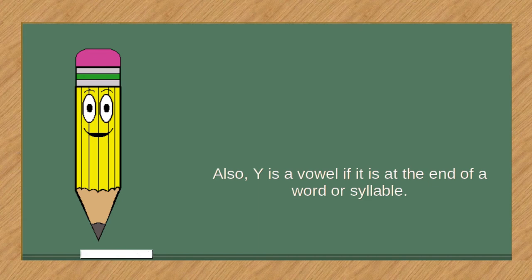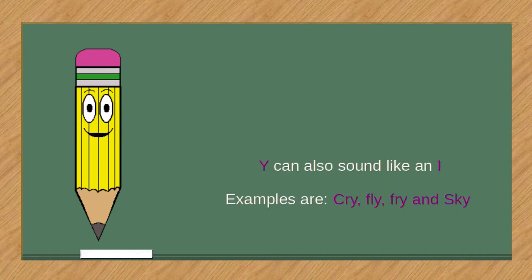Also, Y is a vowel if it is at the end of a word or syllable. Y can also sound like an I. Examples are cry, fly, fry, and sky.